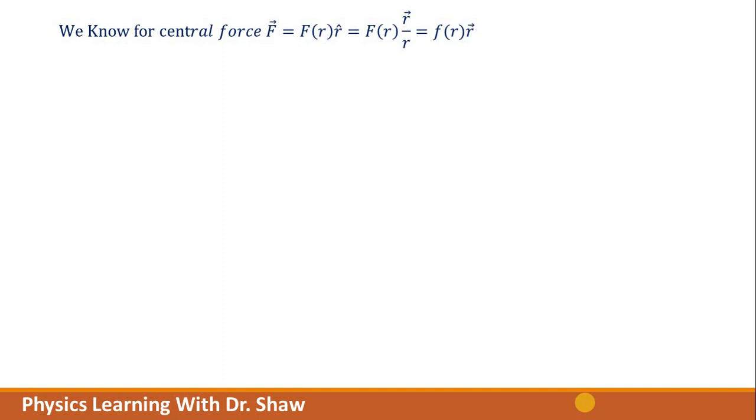Therefore, the central force vector F can be written as some function of distance into r cap, where r cap is the unit vector along the line joining the center and the point of interest. Now r cap can be simply written as r vector divided by r, where r is the magnitude of r vector.